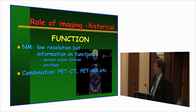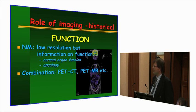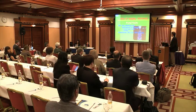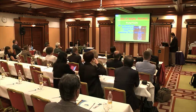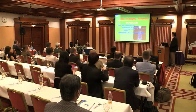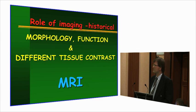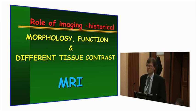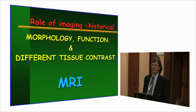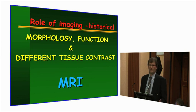Another possibility is nuclear medicine in vivo, where we see a function. The resolution is not so good, which is why it's combined with CT or MR to produce a fusion image — the CT provides the morphological background while the nuclear medicine image shows the functional parts. MR seems to be a perfect method for combining both morphology and function, and it's the only imaging method where we have different tissue contrasts.